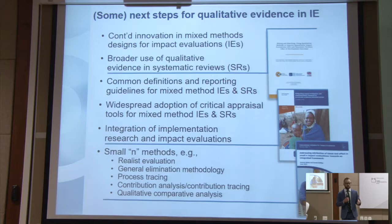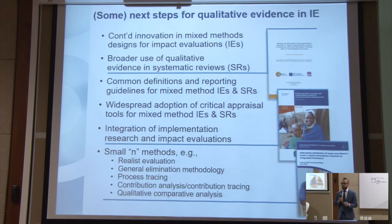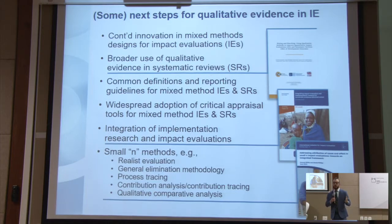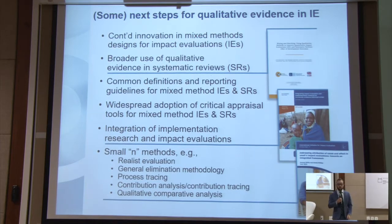Something that all of these methods have in common is a very strong emphasis on clarifying the theory of change, and articulating what we would expect to observe at each of the steps along the pathway if that theory of change is true. For most of these, there's the idea of proposing multiple alternate pathways and then trying to test them out. For instance, in general elimination methodology, you look at all the possible explanations for any change in outcomes and then try to rule them out based on gathering additional evidence at each step of the theorized causal pathway.